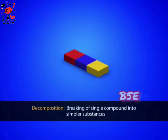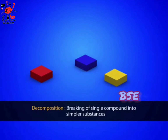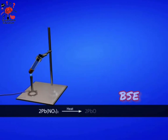When a single compound breaks up into two or many simpler substances, it is called a decomposition reaction. When we heat lead nitrate, it becomes lead oxide with the evolution of oxygen gas and brown fumes of nitrogen dioxide.